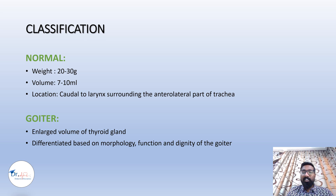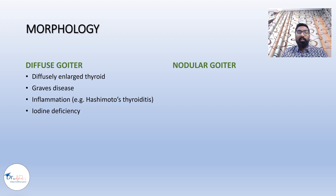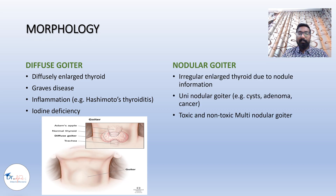Goiter is differentiated based on morphology, function, and dignity. The first classification is by morphology: goiter is divided into two types — diffuse goiter and nodular goiter. Diffuse goiter means the whole thyroid gland is involved and enlarged. This is seen in Graves disease, Hashimoto's thyroiditis, and in cases of iodine deficiency.